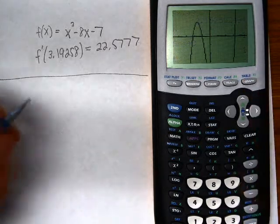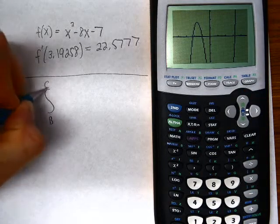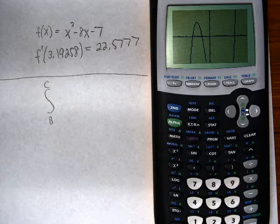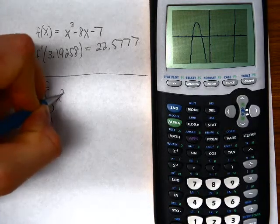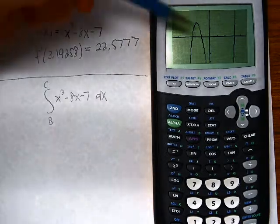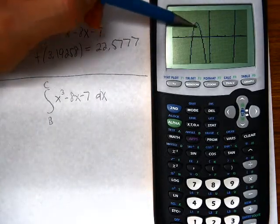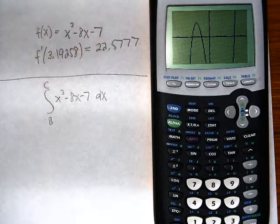So now what I have is the definite integral from b to c of x cubed minus 8x minus 7 dx. That will give me this area between this curve and the x-axis between those two x-values.